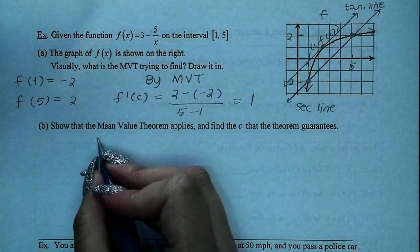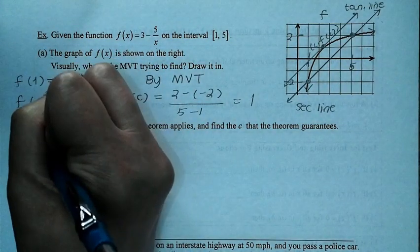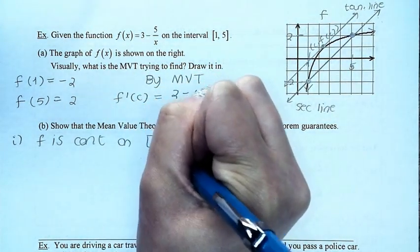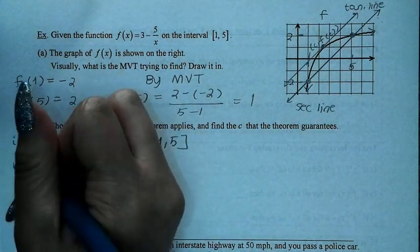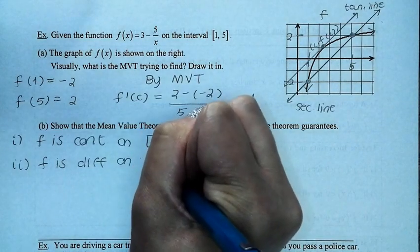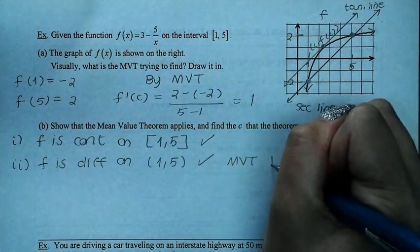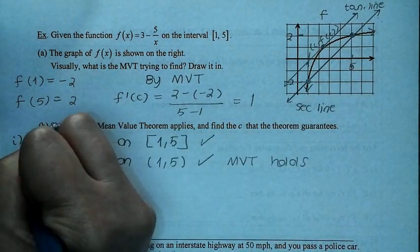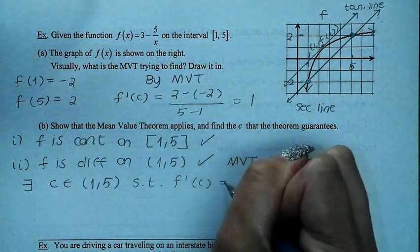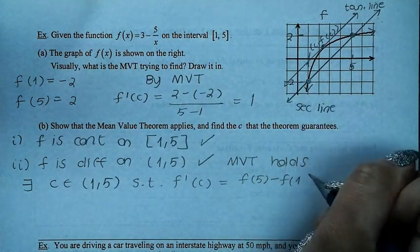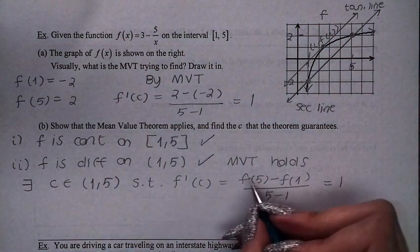For part B, we show that the MVT applies and find the c the theorem guarantees. Condition 1: f is continuous on [1, 5] — confirmed visually and algebraically; the only issue is at x = 0, not in our interval. Condition 2: f is differentiable on (1, 5). Both conditions are met, so the MVT holds. Therefore, there exists a c in (1, 5) such that f prime of c = f(5) - f(1) / (5 - 1) = 1.